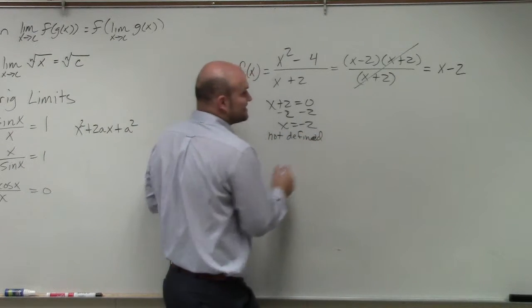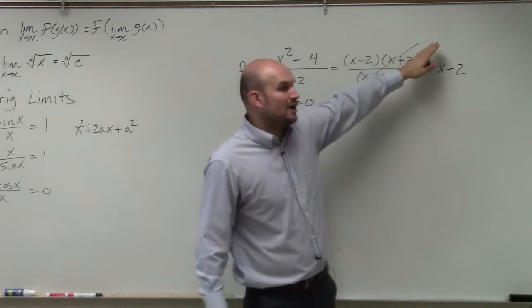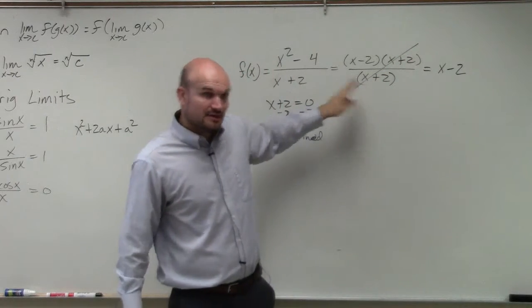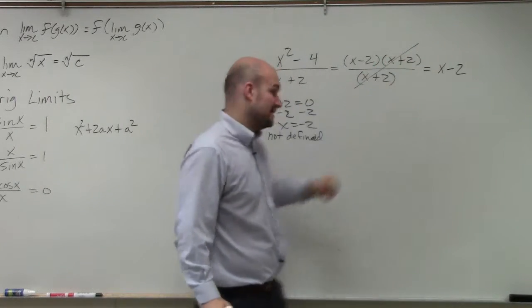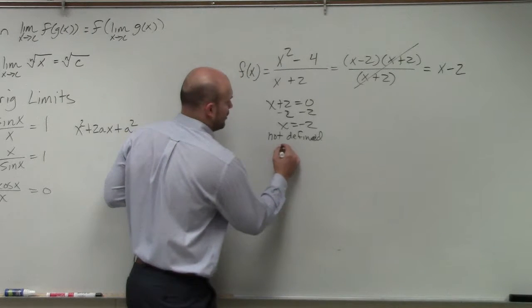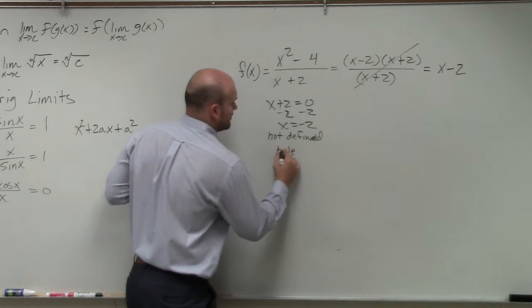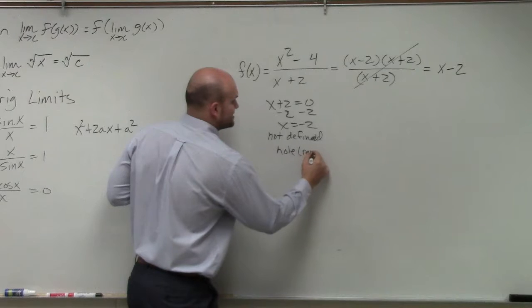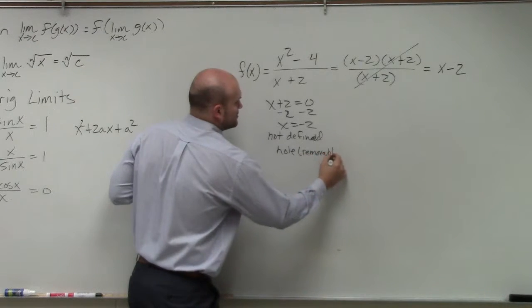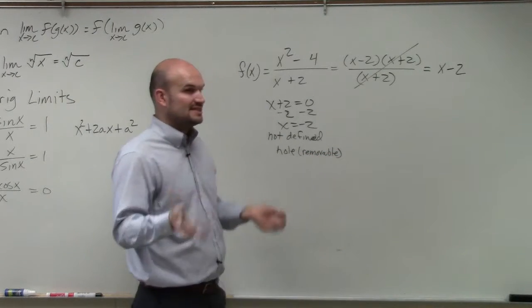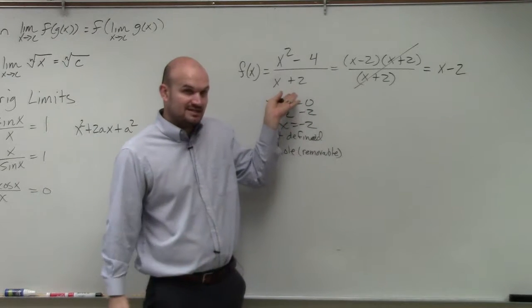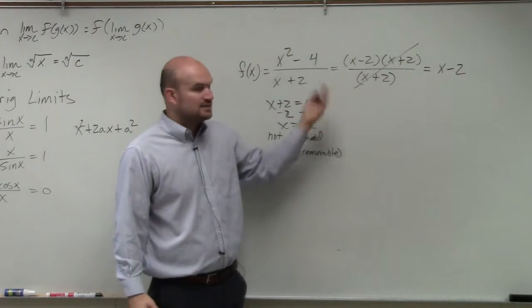Now, since I was able to divide out the discontinuity, I divided out the discontinuity, we call that a hole. And it is removable. So when you can factor out your discontinuity, which in this case is that negative 2, it's called a hole.